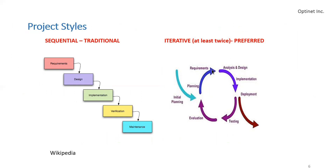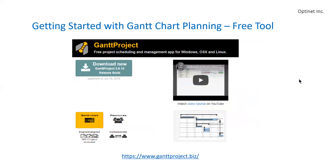But the preferred cycle is the heuristic or iterative approach. You start with the requirement, do analysis and design, implement, and then before you deploy, you test it, evaluate it, and plan again, analyze again. When everything gets green check marks, you then deploy it.